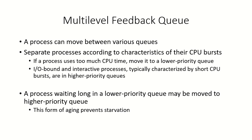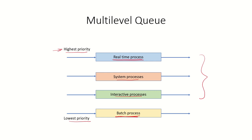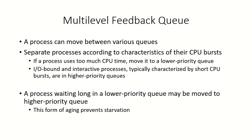In the multi-level queue, processes are kept in various queues based on their priorities, but they do not move between queues. Once a process enters a particular priority queue, it remains there. However, there is a variant where a process can move between queues — this is called the multi-level feedback queue. Here, processes are separated according to the characteristics of their CPU bursts.